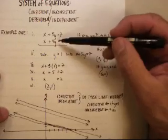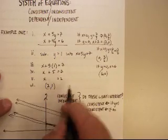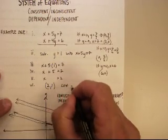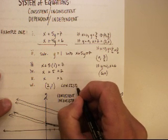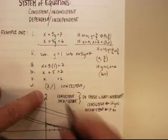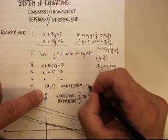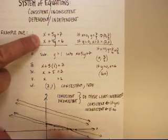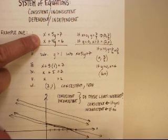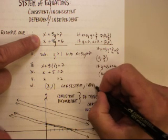So you can actually classify a system two ways: consistent or inconsistent, dependent or independent. This particular system would be consistent because there is a point of intersection. And it would also be independent because these two lines are totally separate from one another. They're two separate lines.